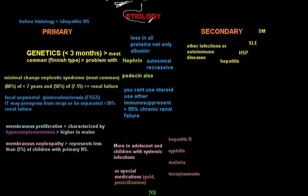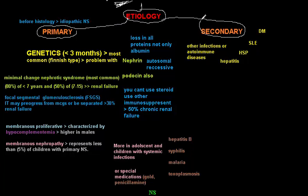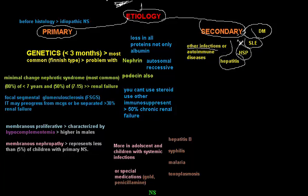Moving to the etiology of nephrotic syndrome: there are two large subgroups — primary and secondary. Primary nephrotic syndrome means destruction in the glomerulus of the kidney without a clear underlying cause. Secondary nephrotic syndrome has an underlying cause that leads to destruction of the kidney allowing proteins to leak, such as diabetes mellitus, SLE, Henoch-Schönlein purpura, hepatitis and other infections, and other autoimmune diseases.